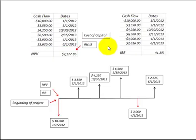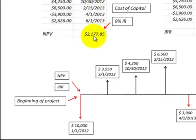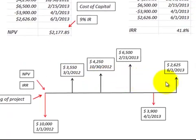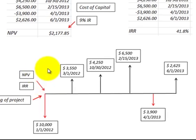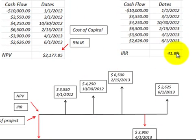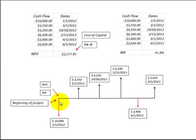Here we summarize our results. The net present value calculated in Excel was $2,177. That means the series of cash inflows and outflows, when brought back to today's dollars, is worth $2,177. The internal rate of return is 41.8% — discounting those cash flows back, that's what this project would return. It sounds ridiculously high, but that's what the cash flows produce.